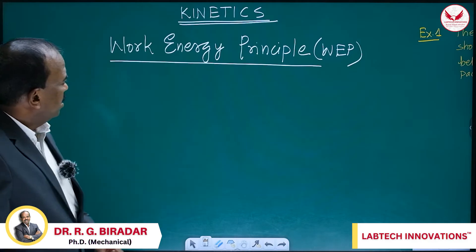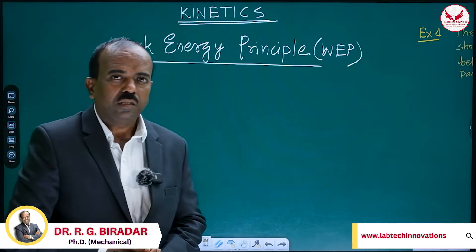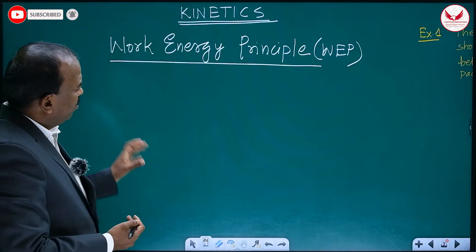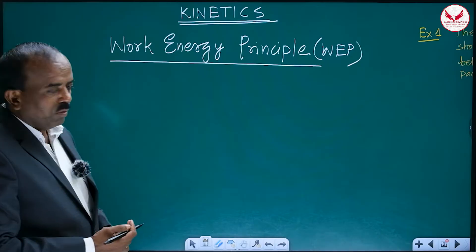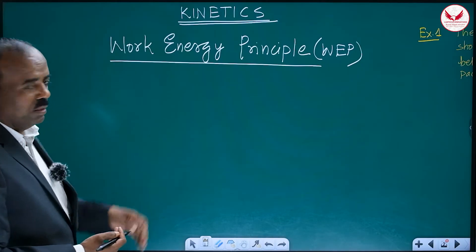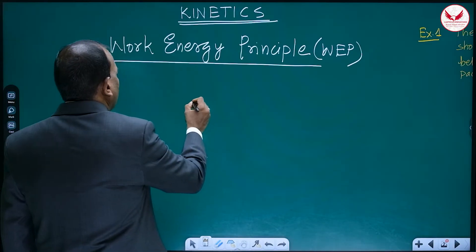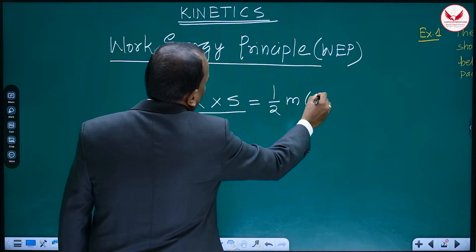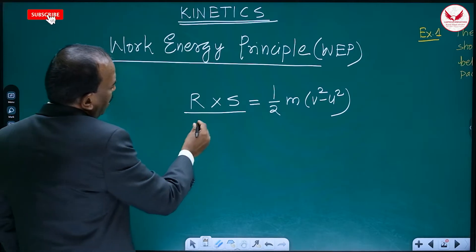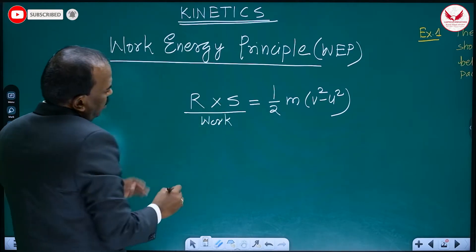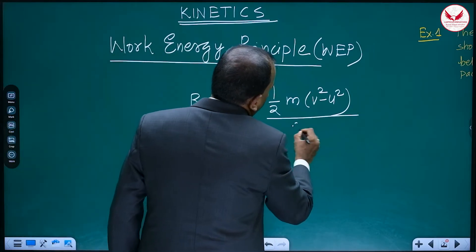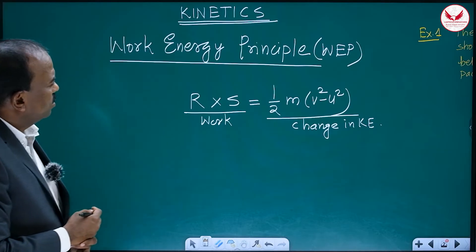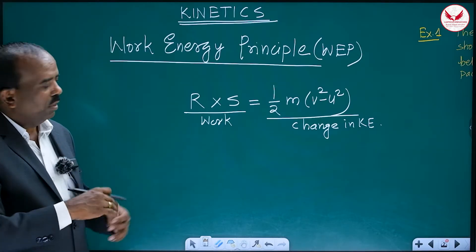Hello students, today we will see kinetics and specifically the work-energy principle. Many problems in kinetics can be solved using the work-energy principle, Newton's second law, or the impulse-momentum principle. The work-energy principle states that the resultant force in the direction of motion multiplied by distance equals the change in kinetic energy: half m times (v² minus u²). The procedure is the same as Newton's second law — first draw the free body diagram, then apply the work-energy principle.